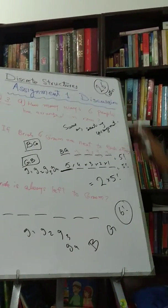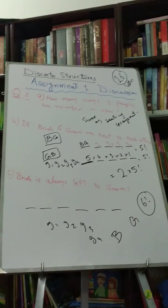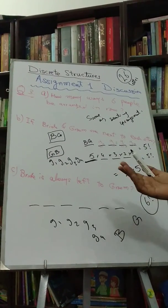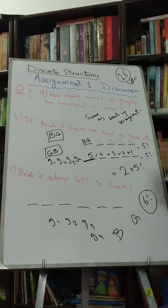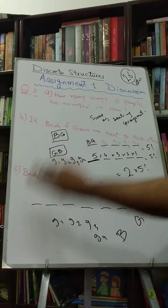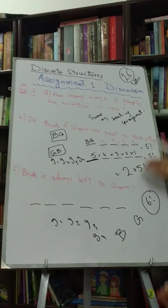So in original six factorial, bride could be either on the right, or it could either be on the left. So half of the time it will be on the right of the groom, half of the time it will be on the left of the groom.